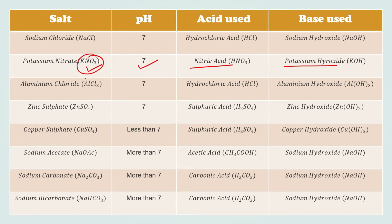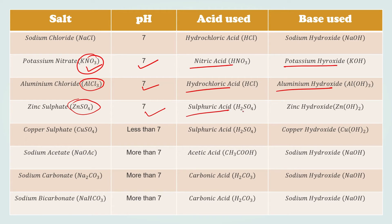For aluminium chloride (AlCl3), the acid used is hydrochloric acid and the base is aluminium hydroxide, and its pH is 7. For zinc sulfate (ZnSO4), its pH is 7; the acid used is sulfuric acid (H2SO4) and the base is zinc hydroxide (Zn(OH)2).